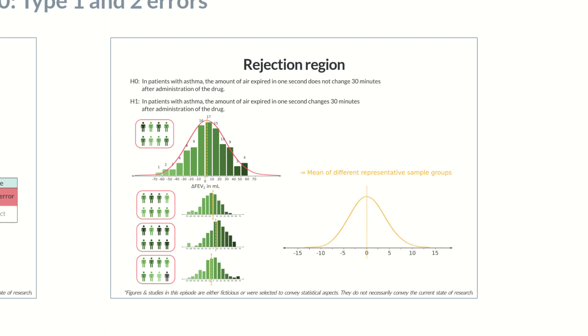In practice, repeating studies is too time-consuming and expensive. So from the mean and scatter of the study data, we can theoretically determine how large the probability is to reject a true null hypothesis and therefore commit a type 1 error.